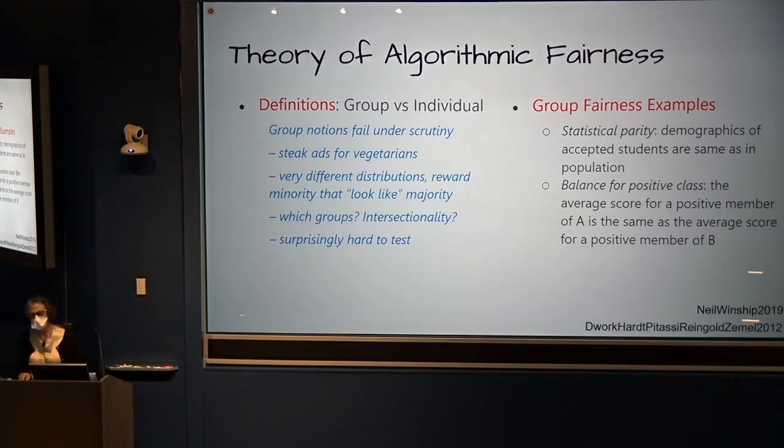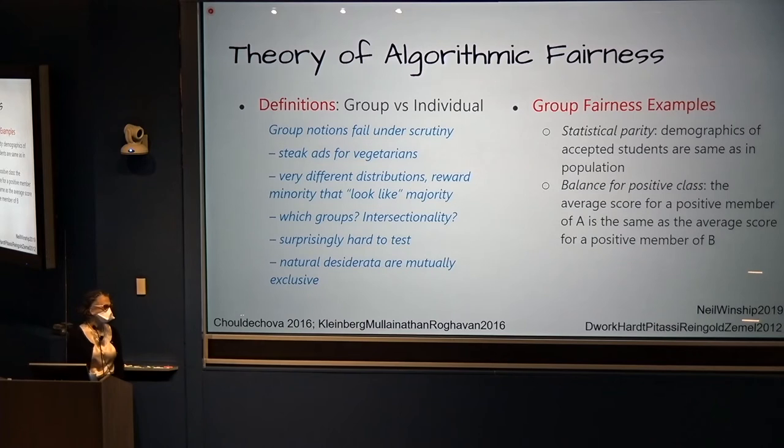It's also surprisingly hard to test group fairness in some cases. A 2019 paper in the Annual Review of Criminology by Neal and Winship argues that standard benchmarking and outcomes tests typically produce invalid inferences that may diverge from reality in either direction, indicating discrimination when it is not present or, alternatively, indicating a lack of discrimination when it is, in fact, present. On top of all of this, very small numbers of absolutely natural desiderata are essentially mutually exclusive. So the group approach is problematic at best.